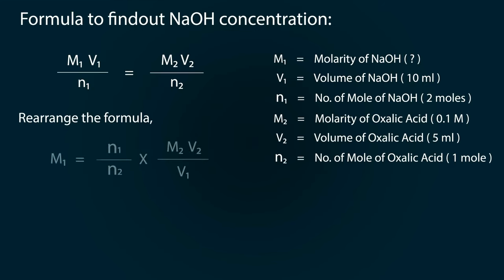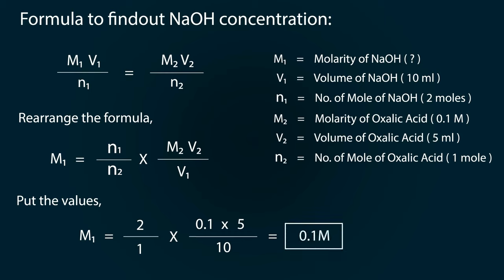Now rearrange the formula as m1 equals n1 divided by n2 multiplied by m2 v2 divided by v1. We put the values and we get our molarity as 0.1 molar for NaOH.